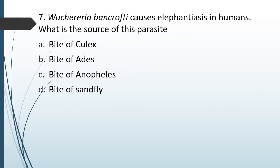Question No. 64: Wuchereria bancrofti causes elephantiasis in humans. What is the source of this parasite? Options: Bite of Culex, Bite of Aedes, Bite of Anopheles, Bite of Sandfly. The correct answer is Option A — bite of Culex mosquito causes elephantiasis or filariasis.